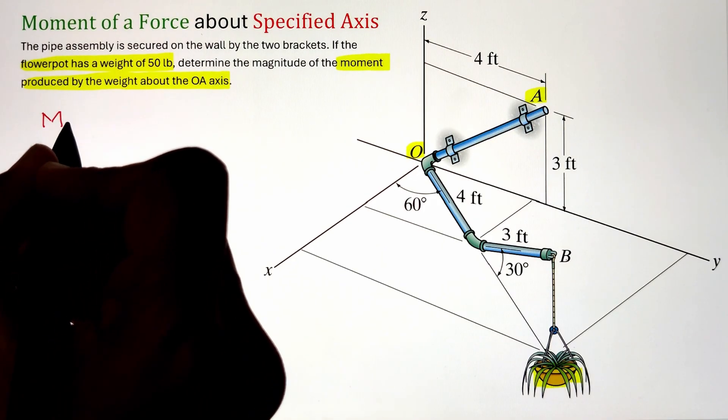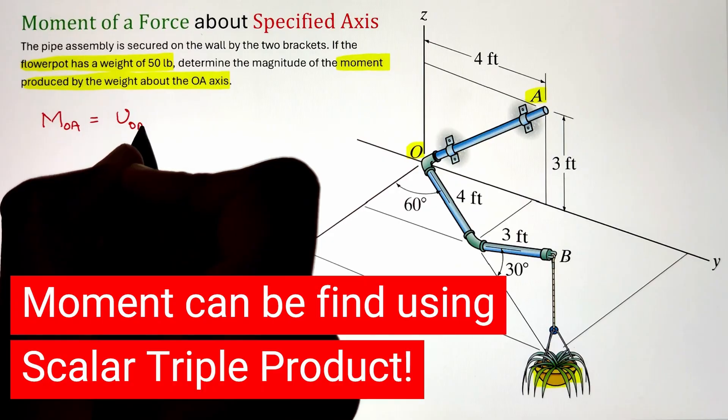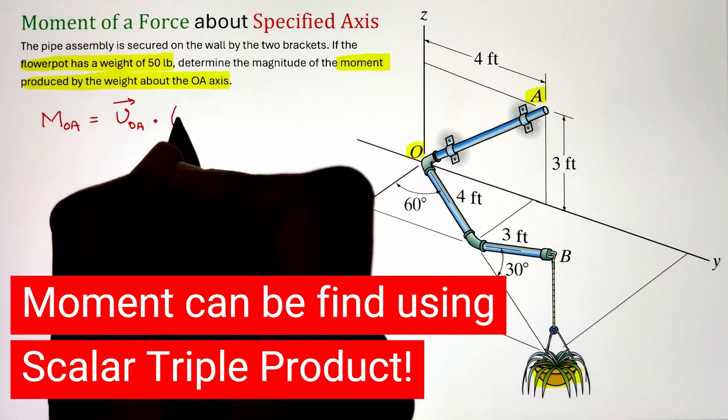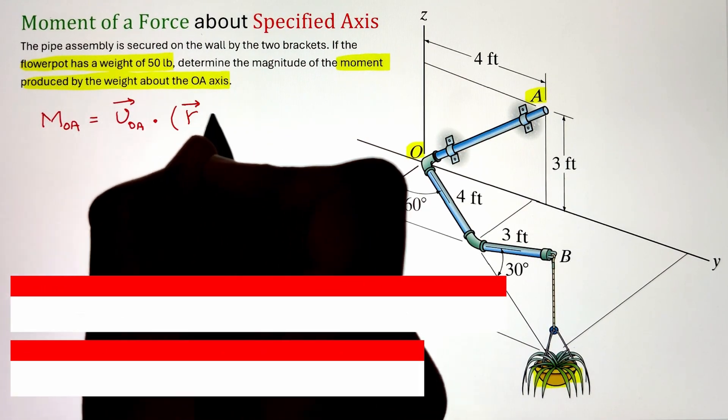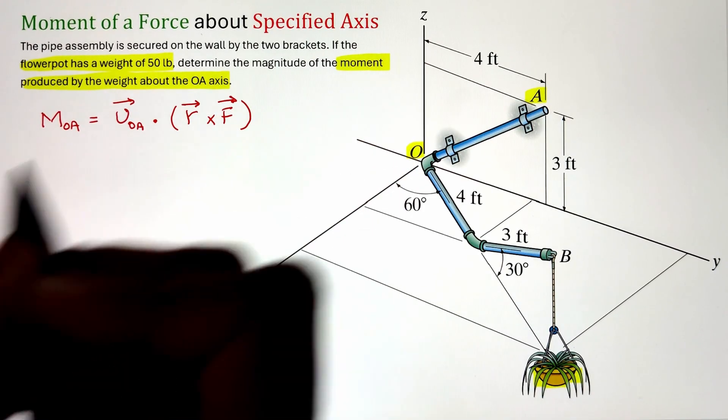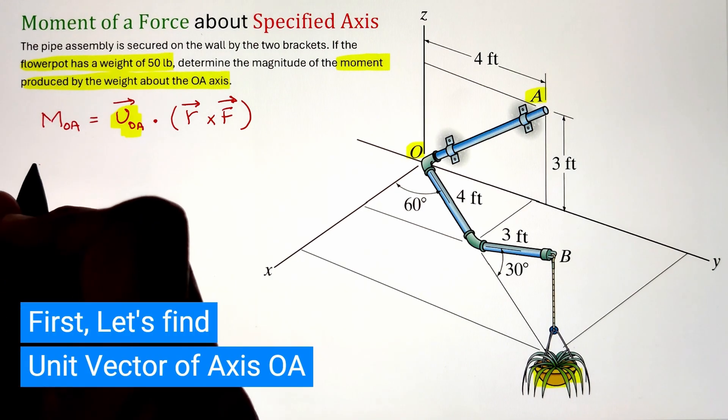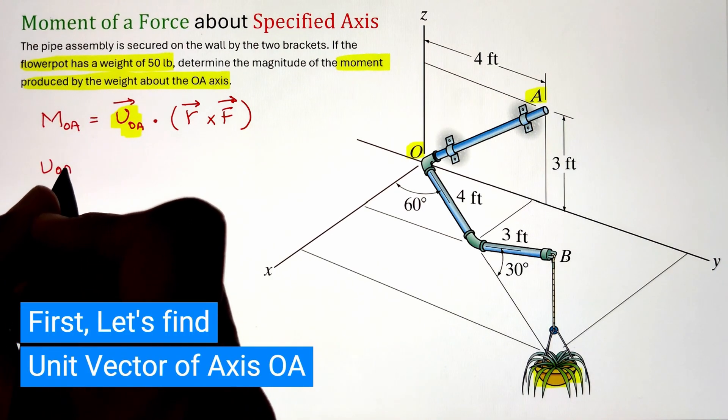This is a product of three vector quantities that give us the scalar quantity in which the very first vector is the unit vector of the axis across which we are calculating the moment. So in this case it is the unit vector of axis OA, whereas our second vector is the moment arm and finally we have our force vector.